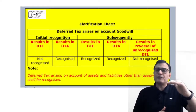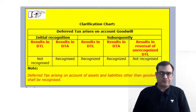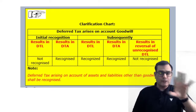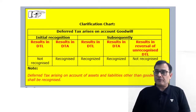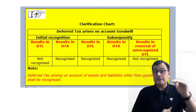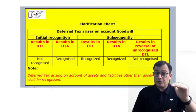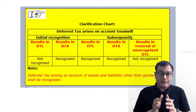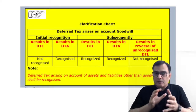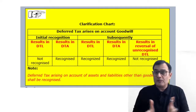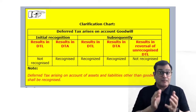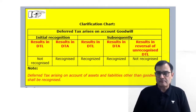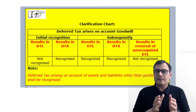The logic is fairly simple. Just imagine the acquisition entry: you have net assets, consideration transferred, NCI, and you get the goodwill as a balancing figure. Now if this results in a DTL, you insert the DTL in this entry — so the entry becomes: net assets to consideration, to NCI, to DTL. The goodwill figure will then undergo a change. The moment you record a DTL arising on goodwill, the DTL gets recorded and the goodwill changes. If the goodwill changes, the DTL on goodwill changes. If you revise the DTL, the goodwill again changes, and this becomes a complete circular effect.